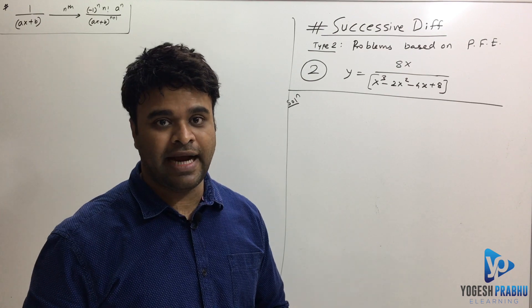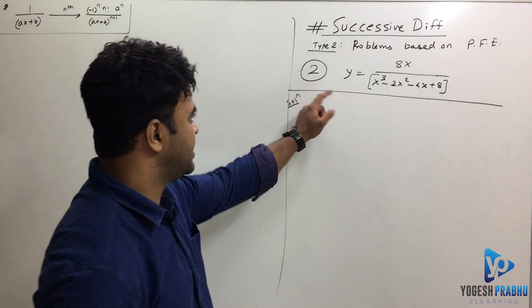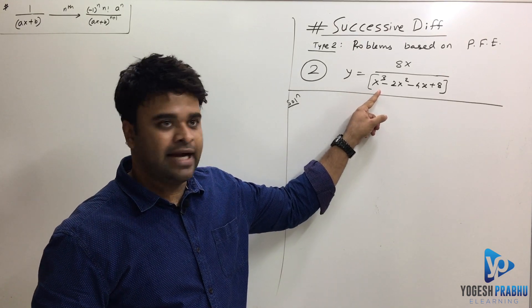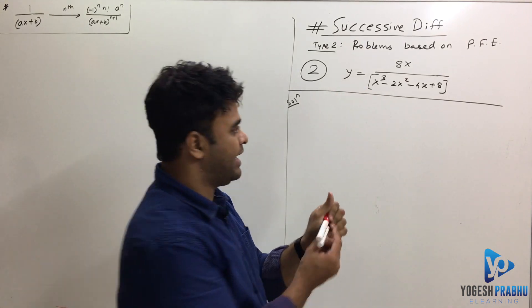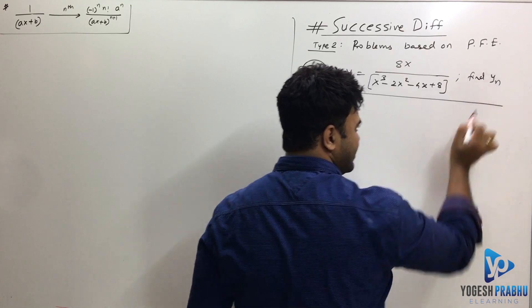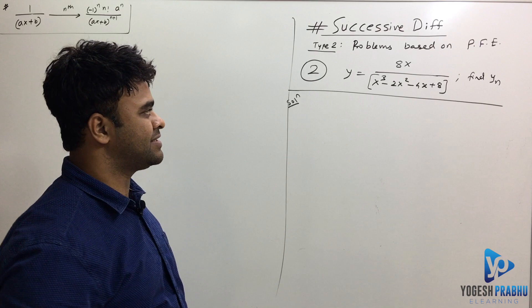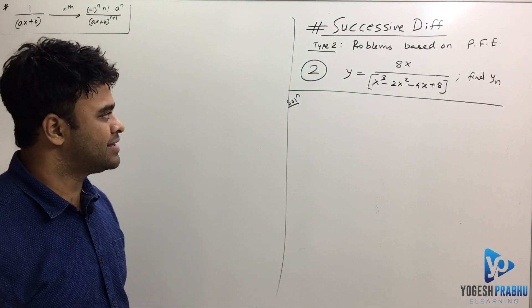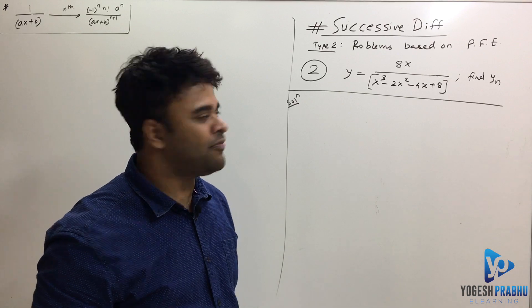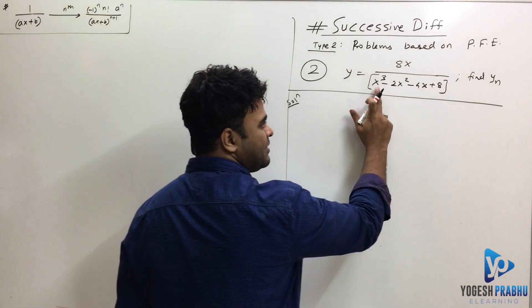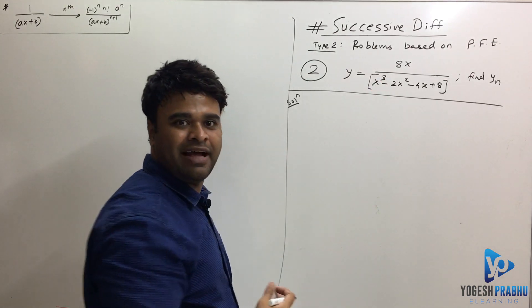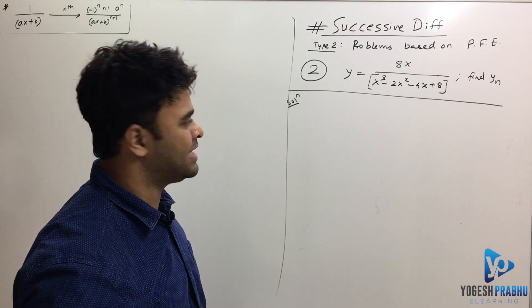Let's look at one more problem. The question is: find y_n, that is, find the nth differentiation of this y term. This is not in any standard form, so first you have to find the factors of the denominator, which is a cubic — so it will have three roots.